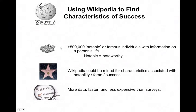Wikipedia is looking for people that are noteworthy — that is, that they are cited, that newspapers have mentioned them, or that they're mentioned on TV. The idea is to mine Wikipedia for characteristics associated with notability, fame, or success. And because it's an online encyclopedia, you can get a lot of data faster and less expensively than surveys.